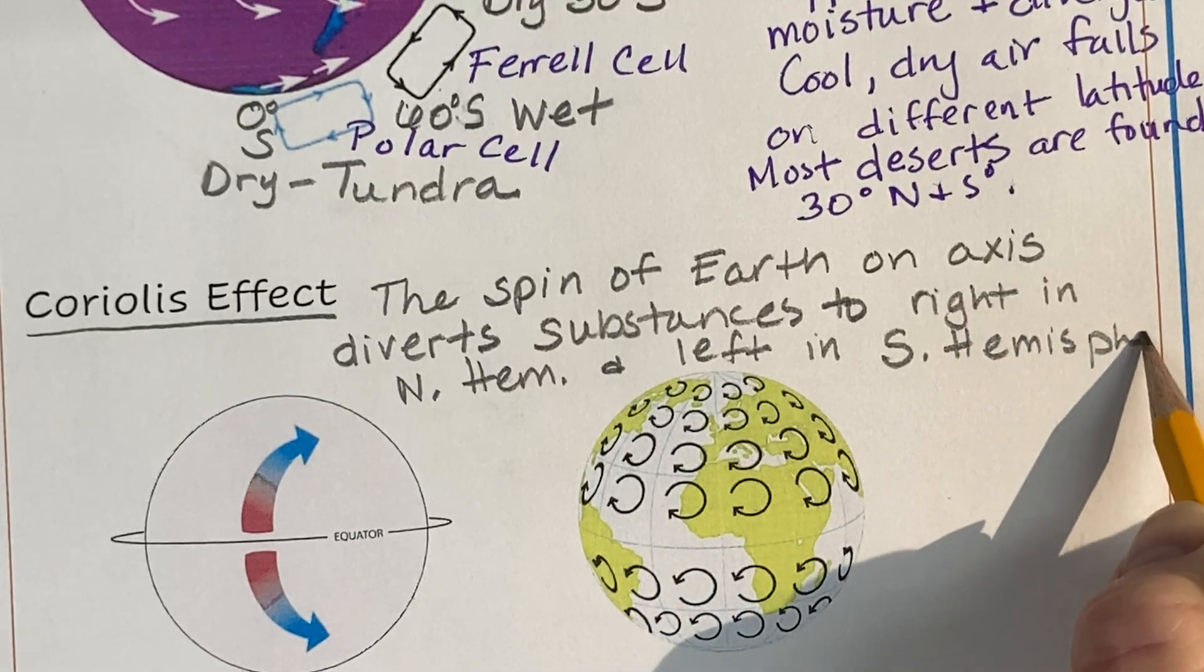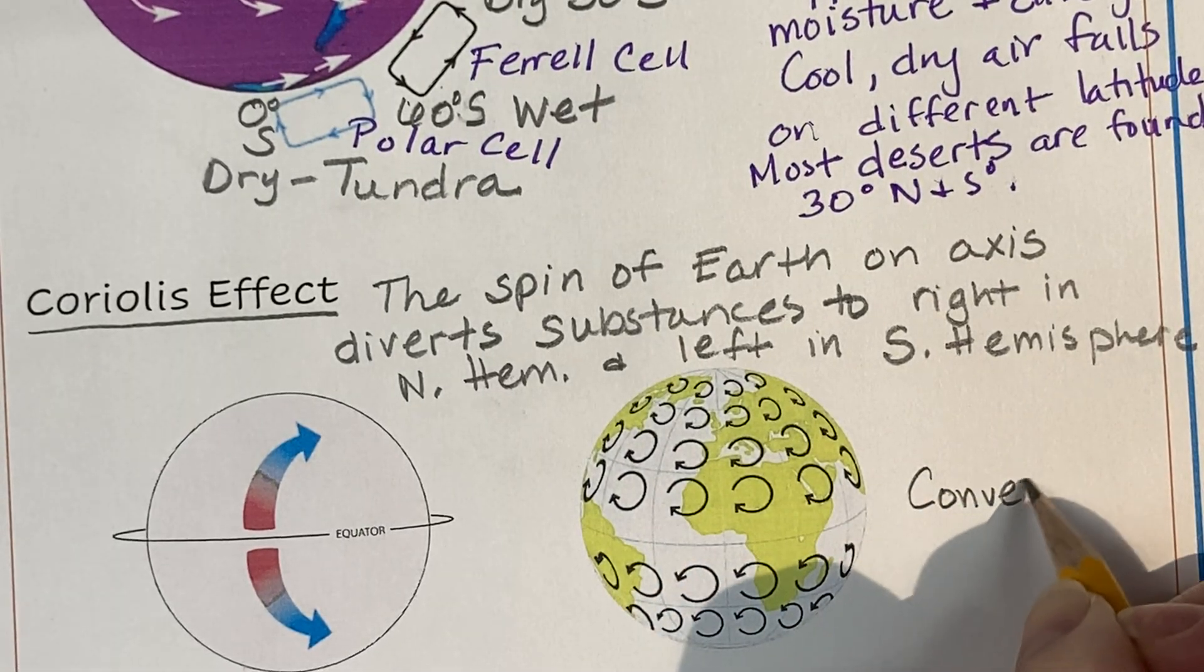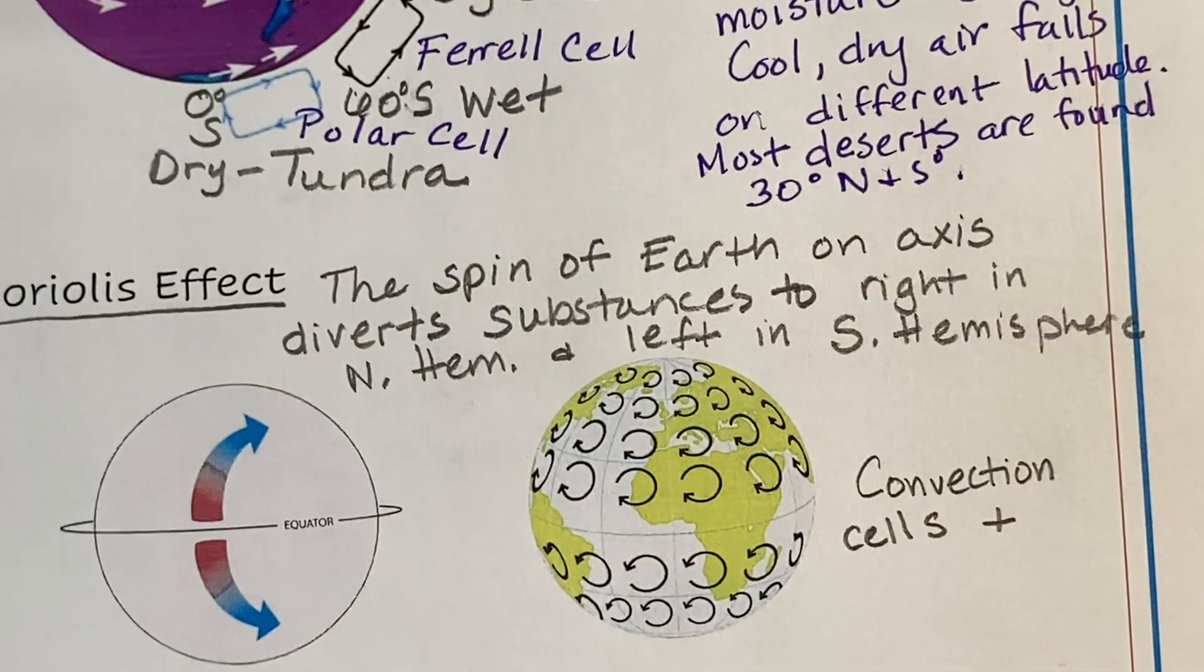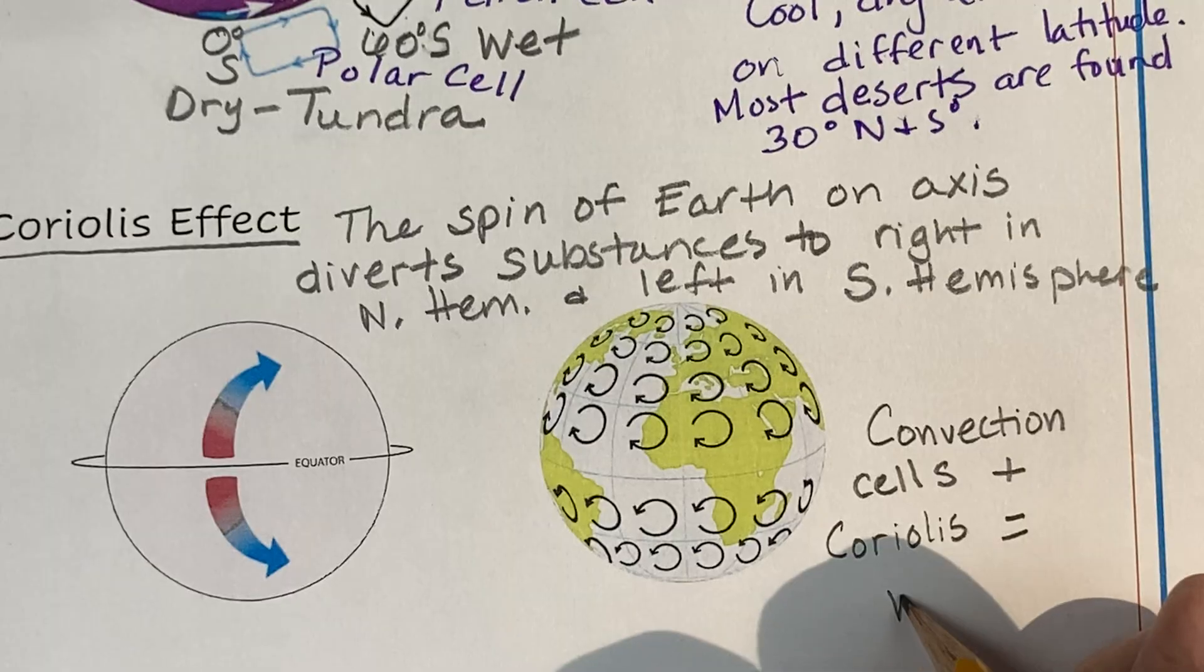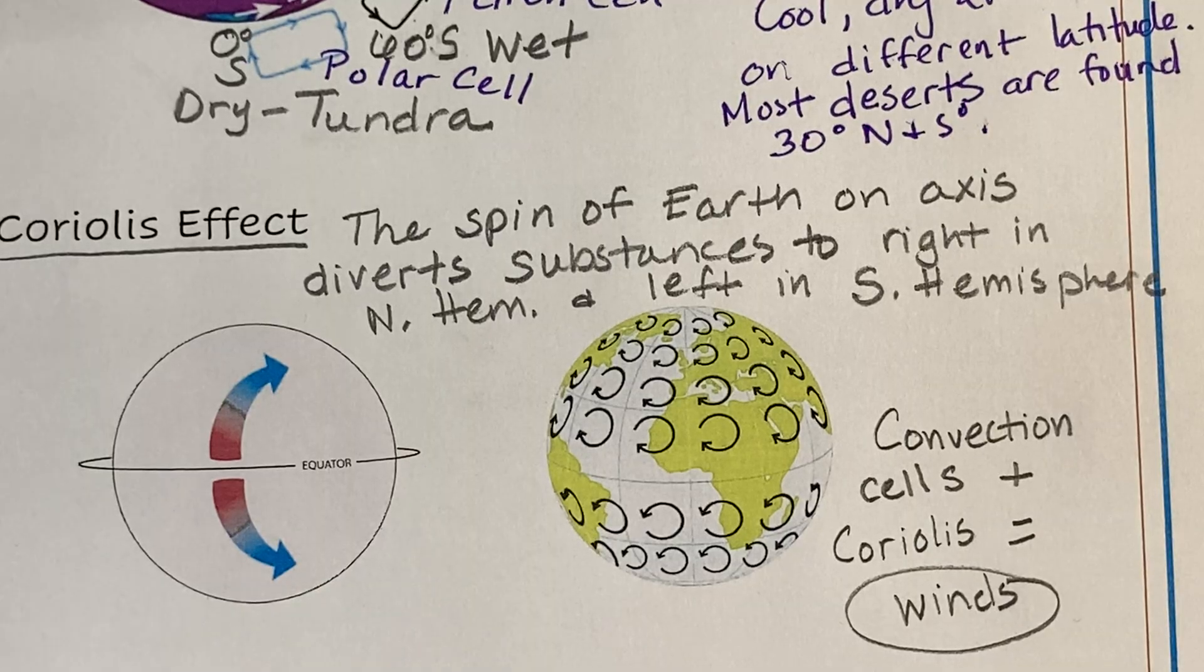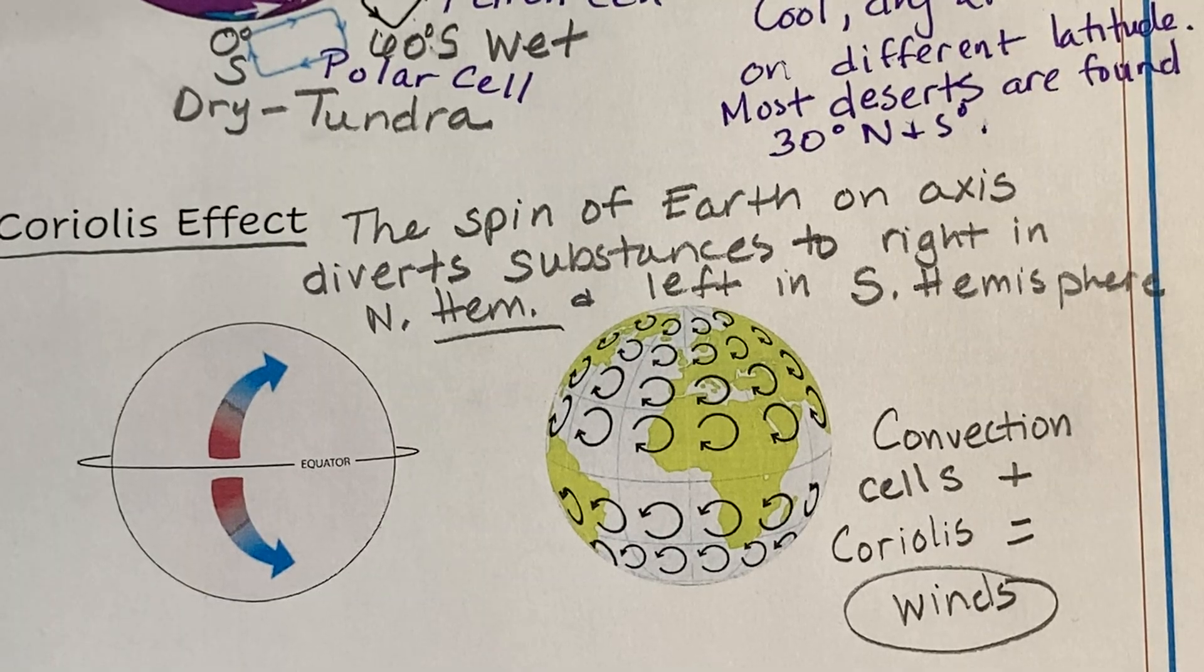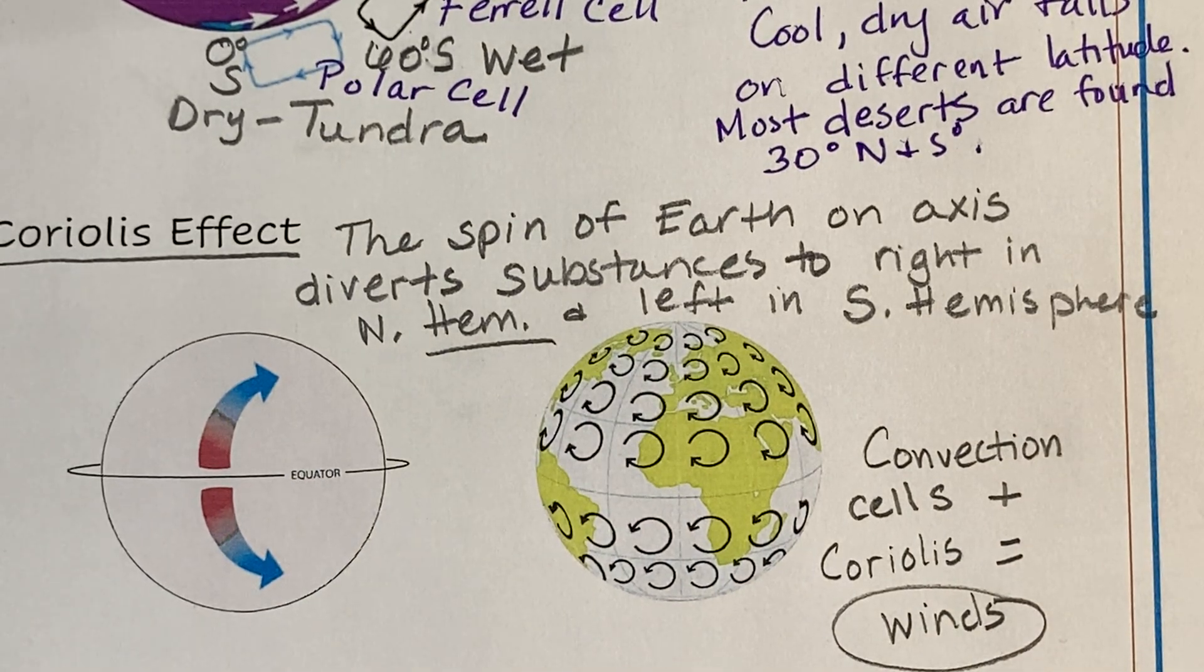Convection cells and the Coriolis effect equal winds. It's the diverting of the air to the right in the northern hemisphere and the left in the southern hemisphere. That's what the Coriolis effect is and it's the air that rose and fell that is being diverted to create winds.